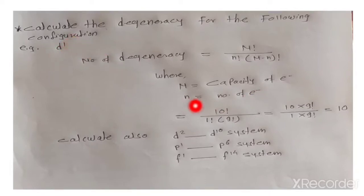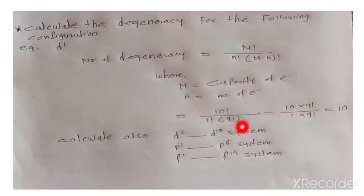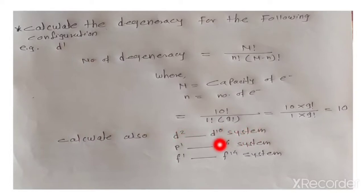For a D1 system, the number of electrons n equals 1. Since we have D orbitals, capital N equals 10. So the calculation is: 10 factorial divided by 1 factorial times (10 minus 1) factorial, which equals 10 times 9 factorial divided by 1 times 9 factorial. The 9 factorials cancel, giving us 10. In this way we calculate the degeneracy for the configuration. We can also calculate for D2 to D10, P1 to P6, or F1 to F14 systems.